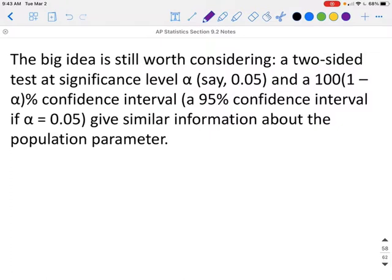The big idea is still worth considering: a two-sided test at a significance level of, say, alpha equals 0.05 and a 100 times (1 minus alpha) percent confidence interval—in this case we did a 95% confidence interval—so if we have 100 times (1 minus 0.05), that gives us 100 times 0.95, or a 95% confidence interval would give us information about the population parameter.